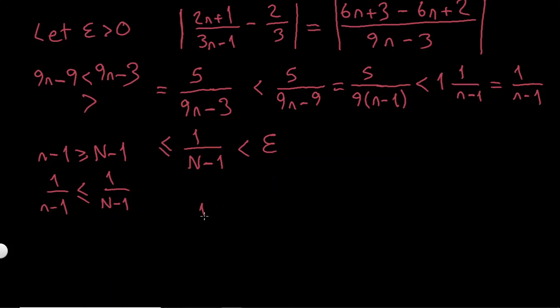So I have that 1 over, so I'm just using this part, 1 over N-1 is less than epsilon. If I just flip them, it will be that 1 over epsilon, let me write it another way. So I'm just saying N-1 is greater than 1 over epsilon, so I will have N is greater than 1 plus 1 over epsilon.